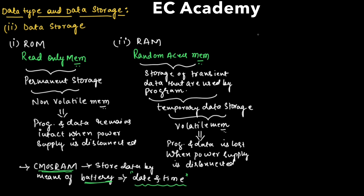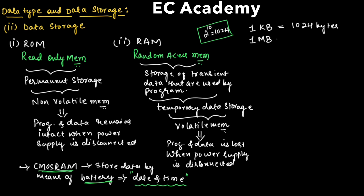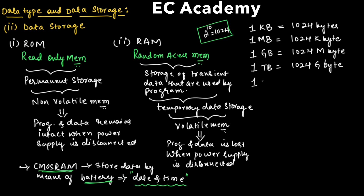When we express an amount of storage: 1 kilobyte equals 1024 bytes, because 1 kilo is represented as 2 to the power of 10, which is 1024. Similarly, 1 megabyte equals 1024 kilobytes, 1 gigabyte equals 1024 megabytes, and 1 terabyte equals 1024 gigabytes.